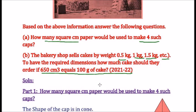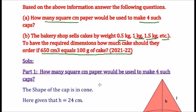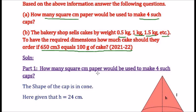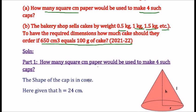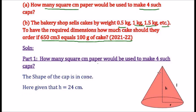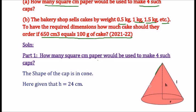How many square cm paper would it be used to make 4 such caps? Here, the cap is in the cone shape and it is given that the height is 24 cm and the circumference is 44 cm.